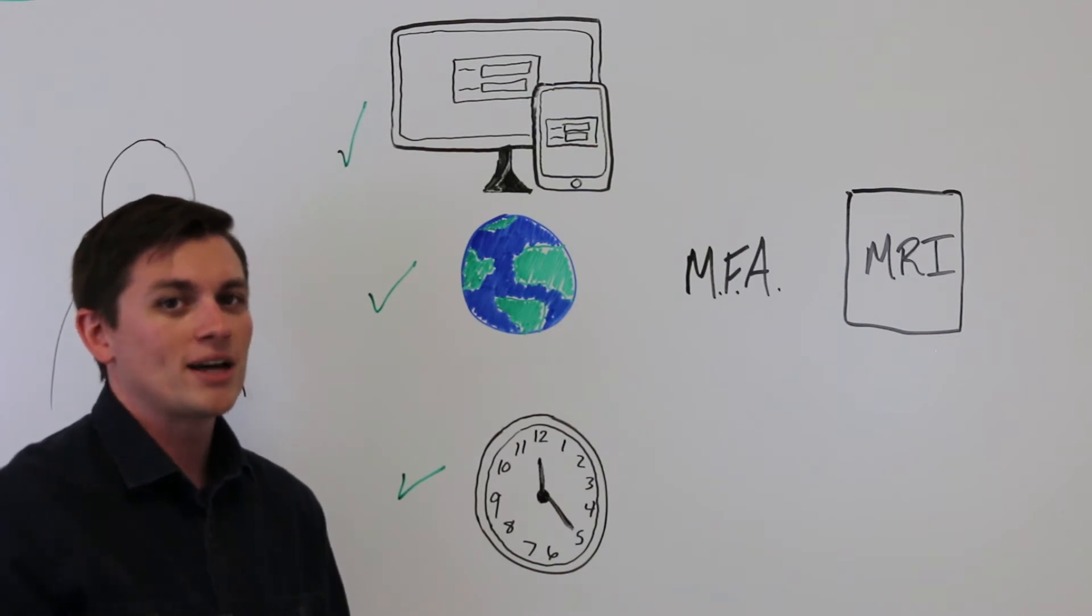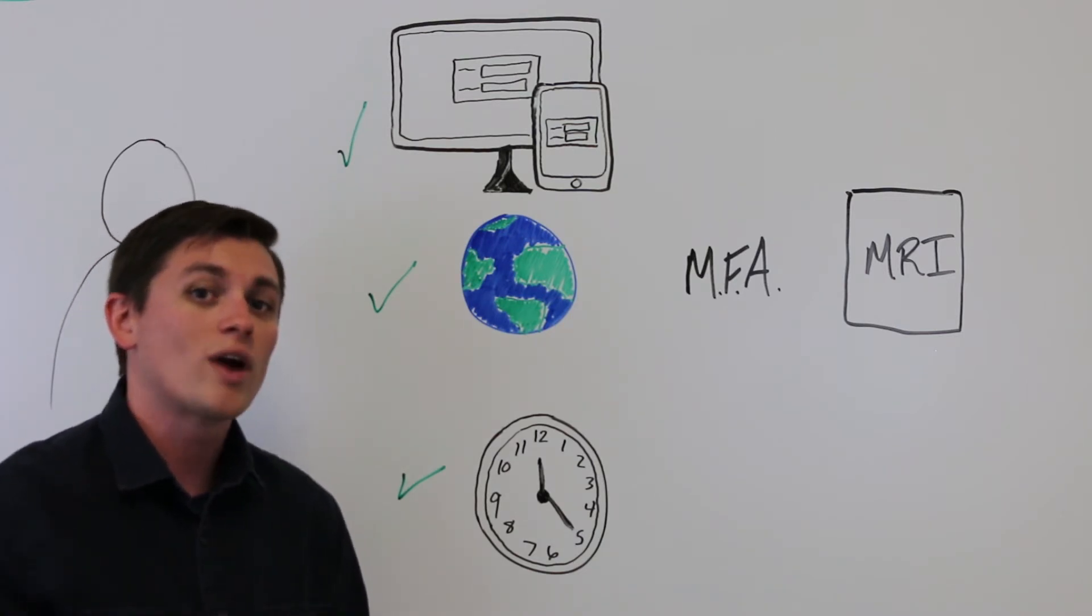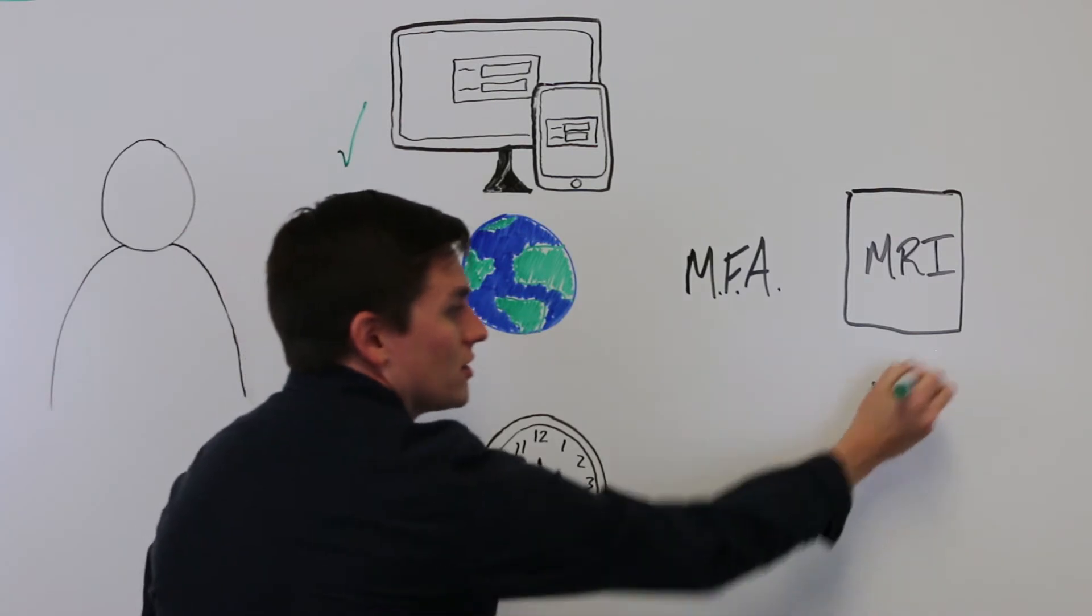For that she's able to bypass MFA because the SSO system recognizes that this is in fact Jane and she's able to log into the application.